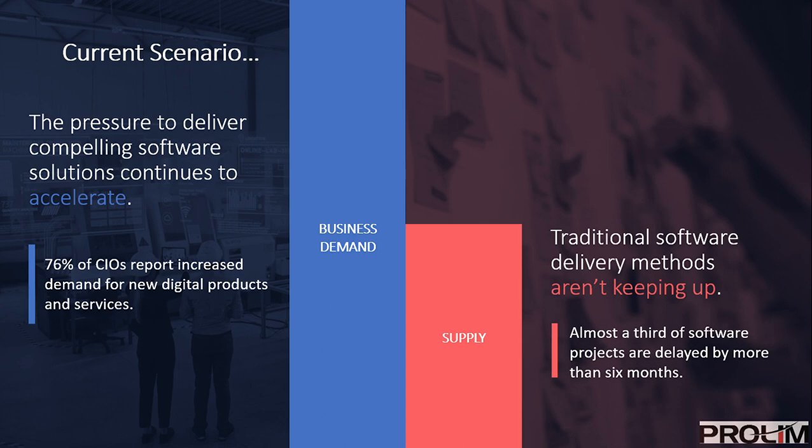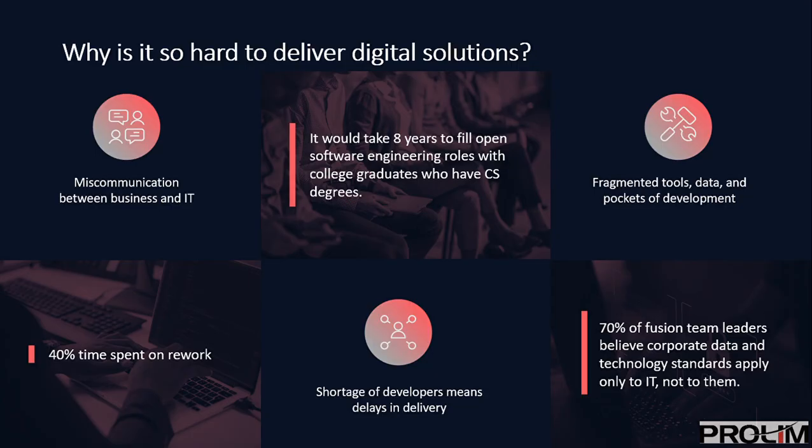Why is this so? One major challenge is that there is a lot of miscommunication between business and IT, which is one of the major reasons for delays in project deliverables. Because of this miscommunication, there is almost 40% of cases where a solution has to be reworked. There is also a lack of engineering skill set to fulfill these roles — it would take about seven to eight years to fulfill all the required roles.